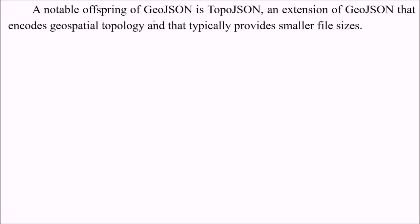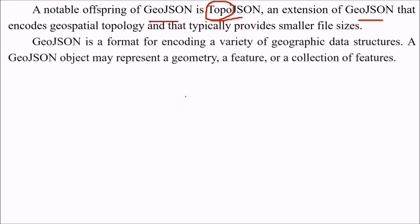A notable offspring of GeoJSON is TopoJSON, an extension of GeoJSON that encodes geospatial topology and typically provides smaller file sizes.